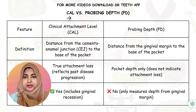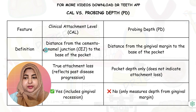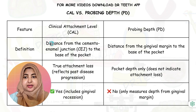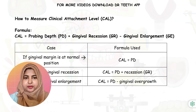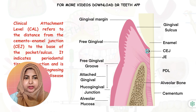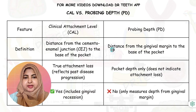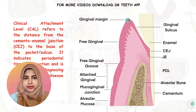Now let's understand the difference between clinical attachment level and probing depth. CAL is the distance from the cemento-enamel junction to the base of the pocket — here this is the cemento-enamel junction and this is the base of the pocket, and the distance between them is the clinical attachment level. Probing depth is the distance from the gingival margin to the base of the pocket — this is the gingival margin, this is the base of the pocket, and this distance is our probing depth.